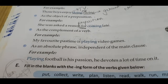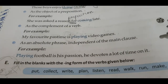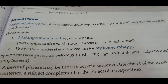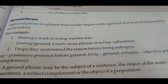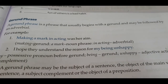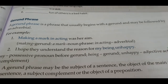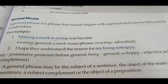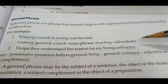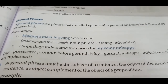Now, a gerund phrase. A gerund phrase is a phrase that usually begins with a gerund and may be followed by an adverbial. An adverbial relates to an adverb and defines the sentence or the verb. For example: 'Making a mark in acting was her aim.' Here 'making' is the gerund, 'a mark' is a noun phrase, and 'in acting' is the adverbial. Another example: 'I hope they understand the reason for my being unhappy' — here 'my' is a possessive pronoun before the gerund.